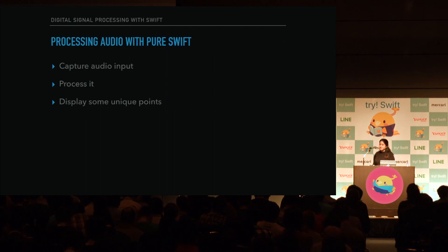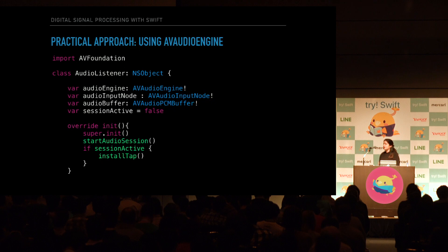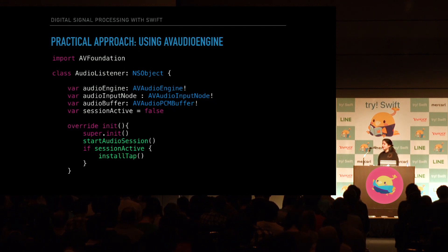So let's see what we can implement in pure Swift. The steps we'll take are: capturing audio input, processing it, and displaying some unique points in the spectrum — the FFT. We know that we're offered AV Audio Engine within AV Foundation, so let's say we have a separate class called AudioListener where we'll invoke and instantiate our audio engine. This is by no means production ready — it's done to achieve a quick and fast implementation.